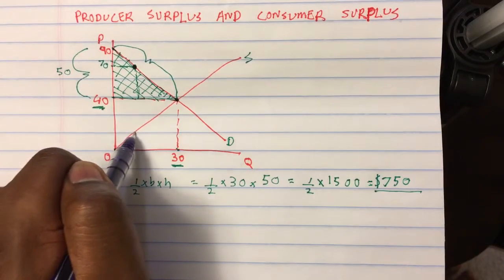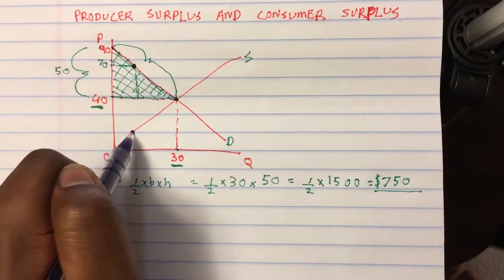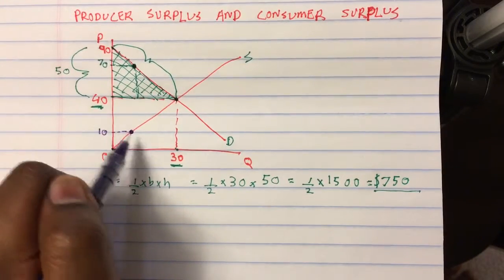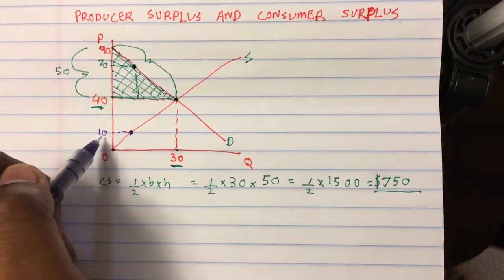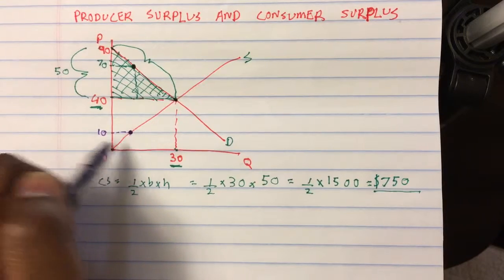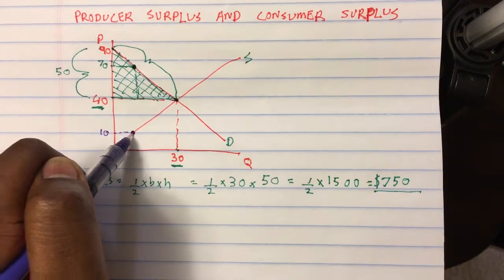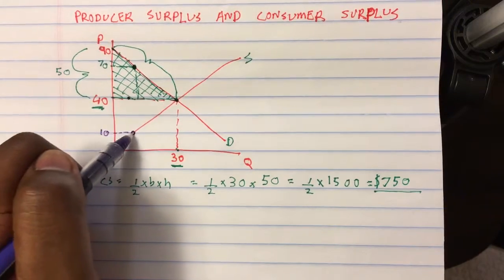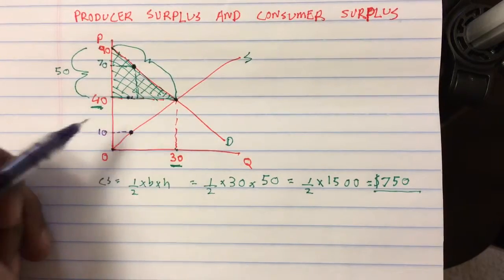Now let's look at this one firm right here. Supposing this one firm, that firm's cost of production is $10. It costs this firm $10 to produce the product and this firm is able to sell it for 40. So this firm is making a profit of $30.